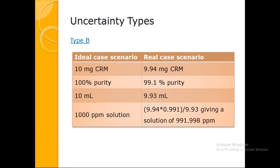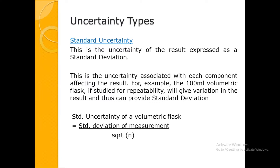In reality, the balance may have only weighed 9.94 mg due to a small linearity error; the CRM may be only 99.1 percent pure, not 100 percent; and the volumetric flask may only have a capacity of 9.93 mL. So instead of a 1000 ppm solution, you have generated 991.998 ppm. This error will be carried forward in calculations — a small example showing how Type B uncertainty is also important.